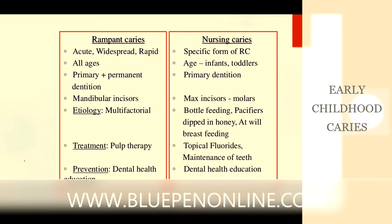Whereas in nursing caries, or early childhood caries, it is a specific form of rampant caries, commonly found in infants and toddlers — rampant caries can be found in any age group — and it is commonly found in primary dentition. Maxillary incisors and molars are commonly involved, and mandibular incisors are very rarely involved, except in severe early childhood caries. Mandibular incisors are not involved mainly because there is pooling of saliva, which has a remineralizing property and cleansing action. The etiology includes bottle-feeding, pacifiers dipped in honey, or at-will breastfeeding.